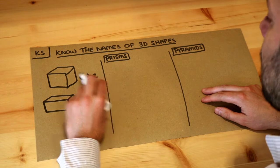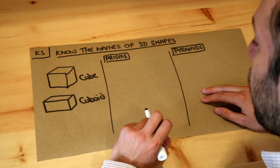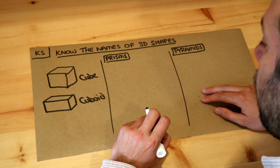So a cube can be thought of as a 3D version of a square and a cuboid can be thought of as a 3D version of a rectangle.